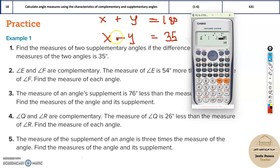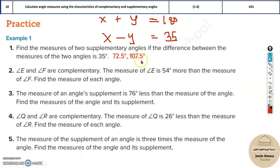What do we get? The answers are 107.5 and 72.5. So one of the angle is 107.5, one more angle is 72.5. So these are the answers. Now this is about supplementary. I'll quickly do one more for complementary over here.